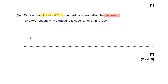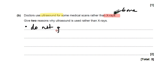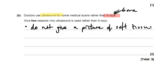X-rays are normally used to give scans of bone, and they can only really tell the difference between bone and soft tissue. So x-rays are not used in some cases because they don't give a picture of the soft tissue. You could say the converse: x-rays give pictures of bones, but ultrasound gives pictures of soft tissue.